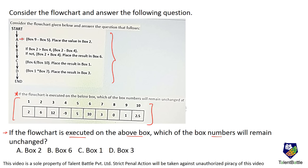The first step is box 9 minus box 5. Box 9 is 1 and box 5 is 5, so 1 minus 5 comes out to be minus 4. Place the value in box 2 — so minus 4 goes into box 2. Next, check if box 2 is greater than box 4.